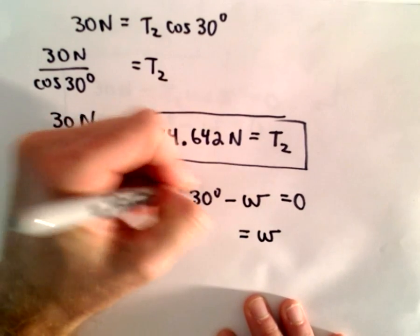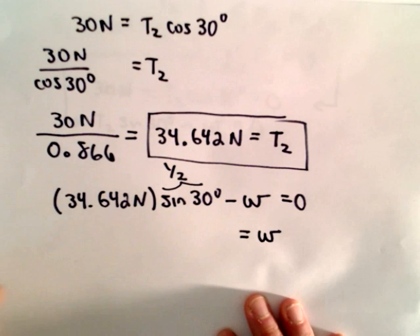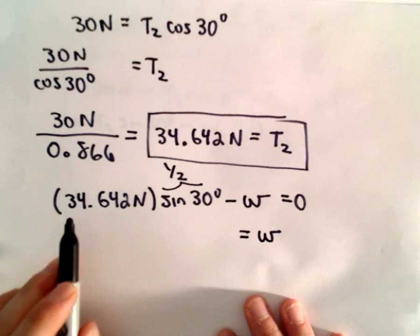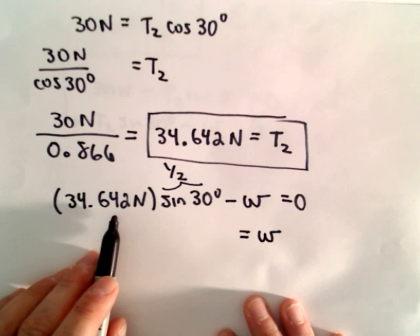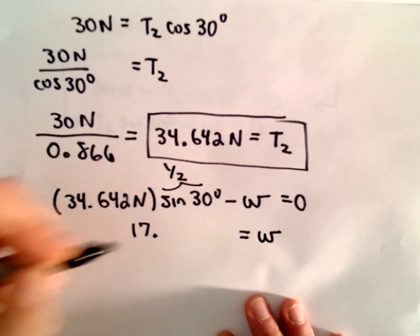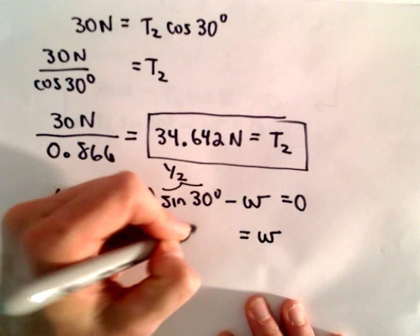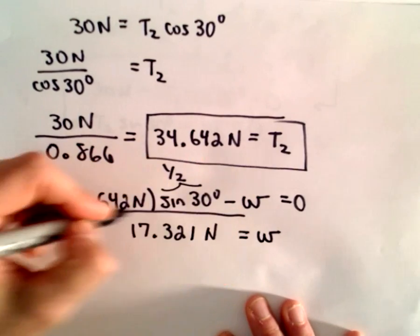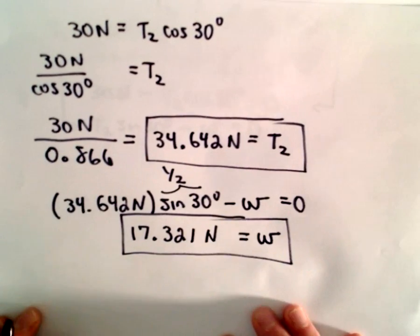Recall that sine of 30 degrees, that's just one-half. So if we take 34.642 and multiply that by one-half, we'll get 17.321 newtons. And that's going to be the weight of our object.